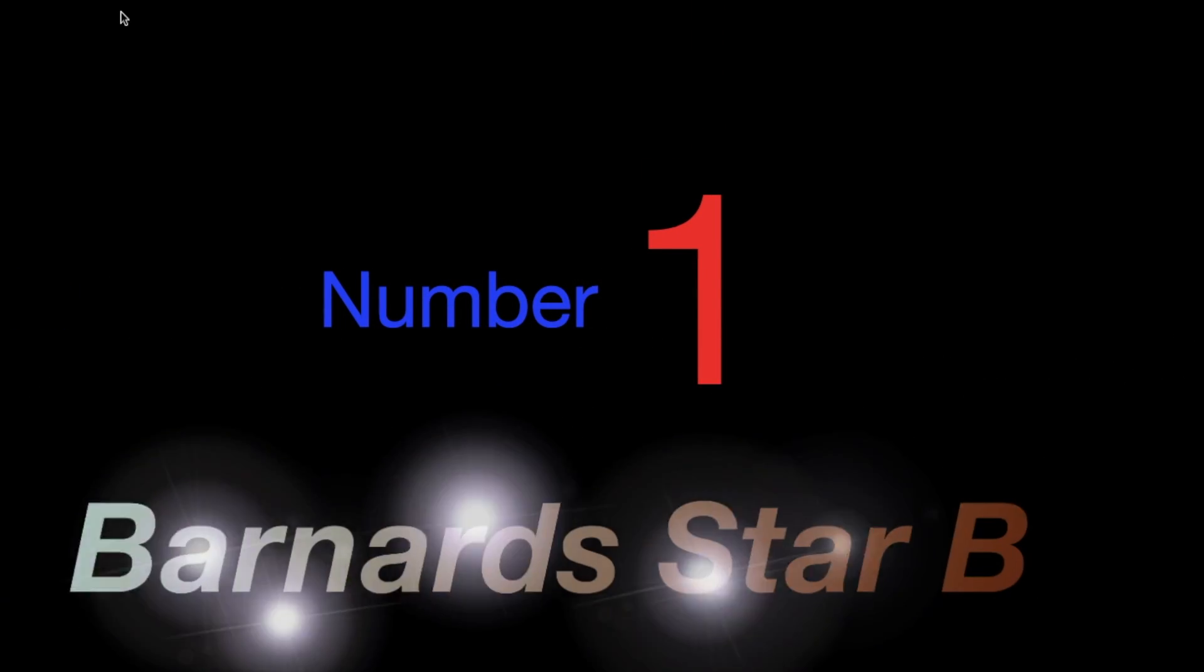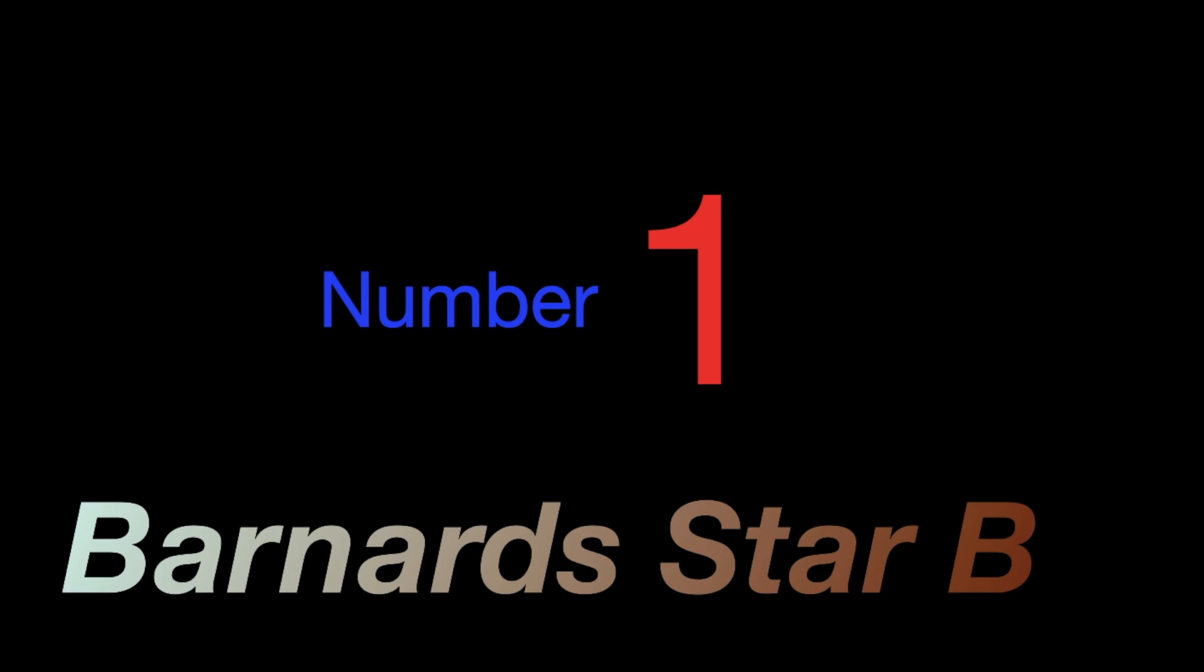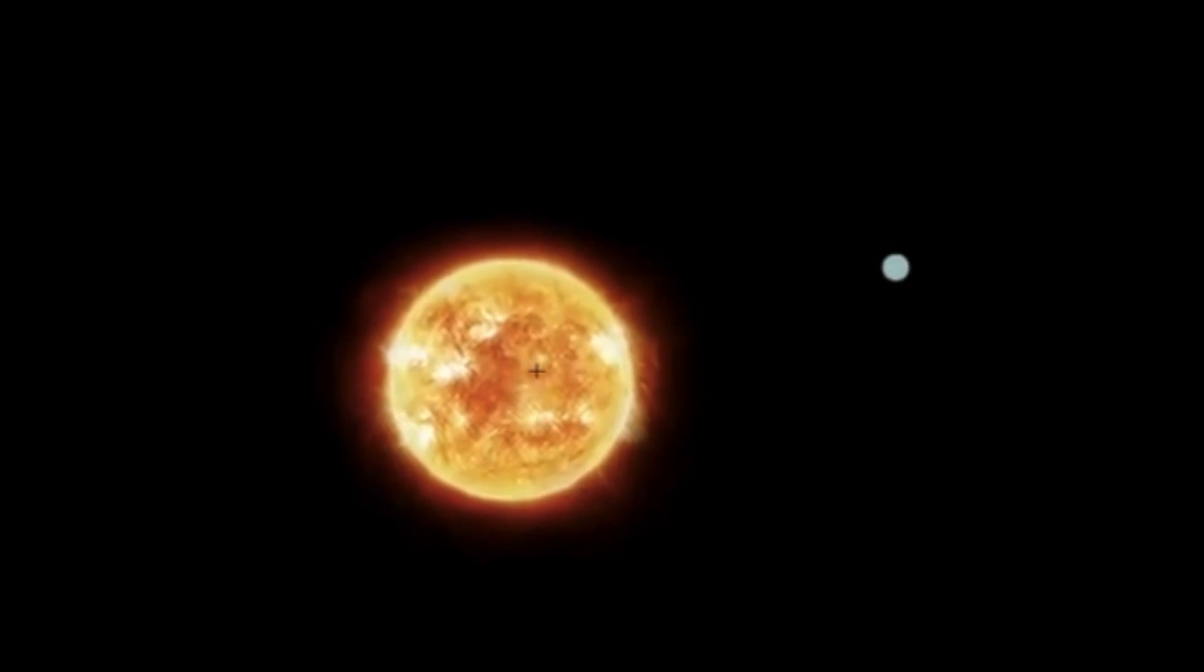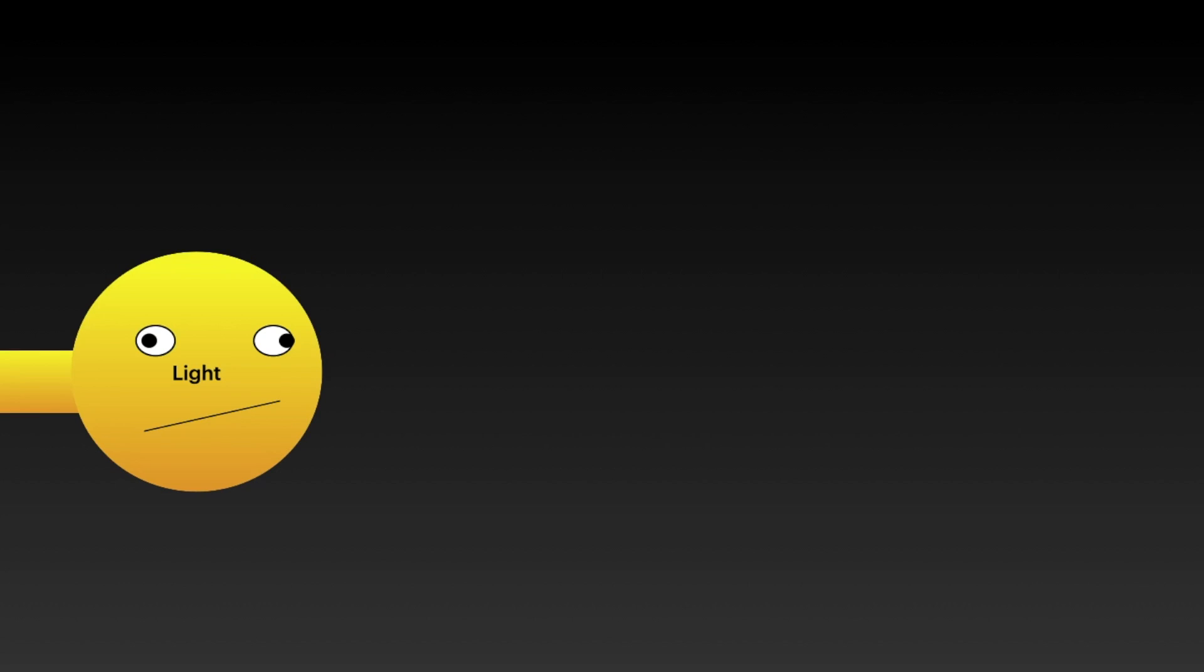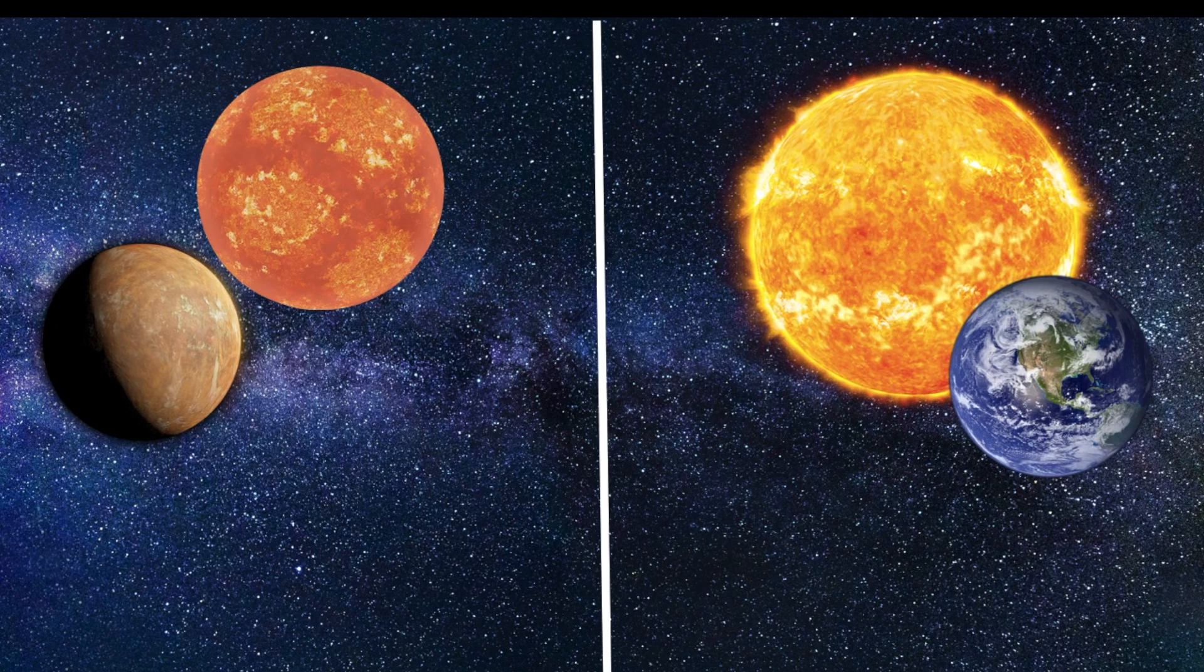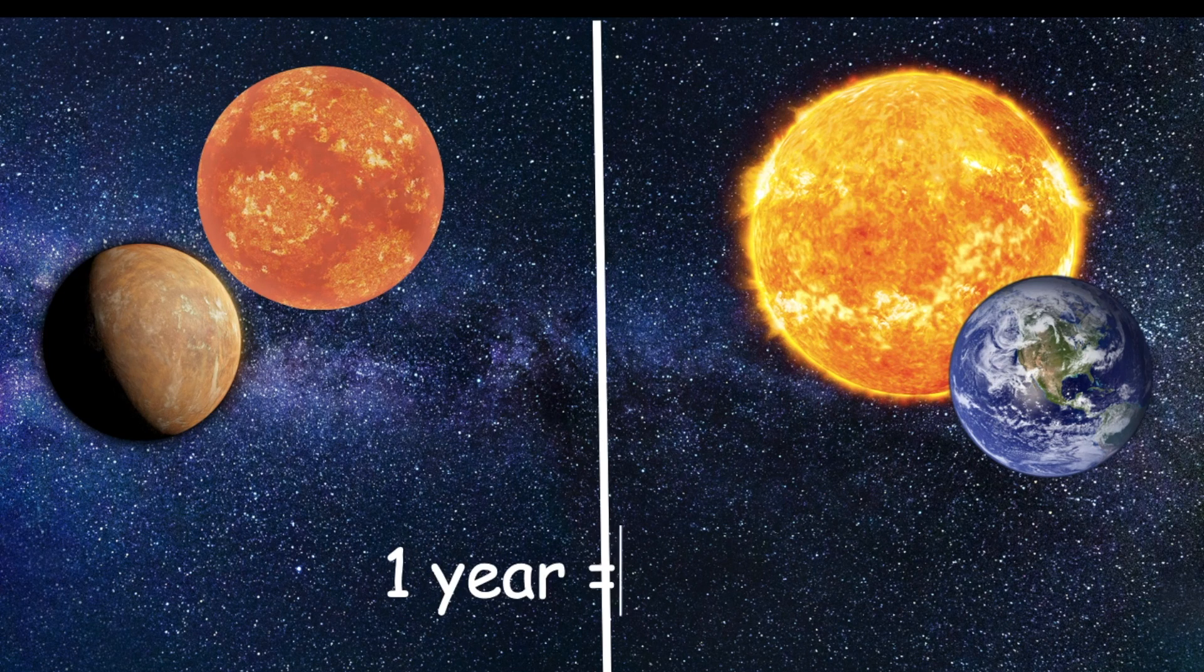Number 1: Barnard Star b, or Barnard b. Barnard star b orbits Barnard star and is about 6 light years from Earth. This means it would take 6 years traveling at light speed to reach Barnard b. One year on Barnard b is about 233 Earth days.